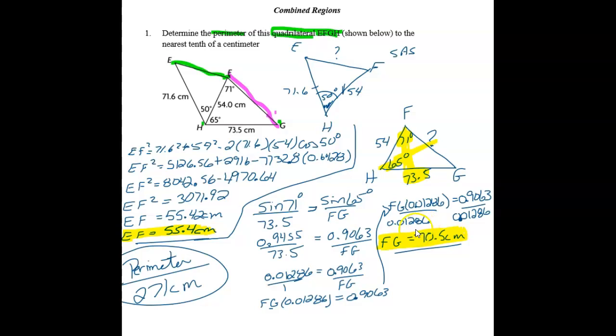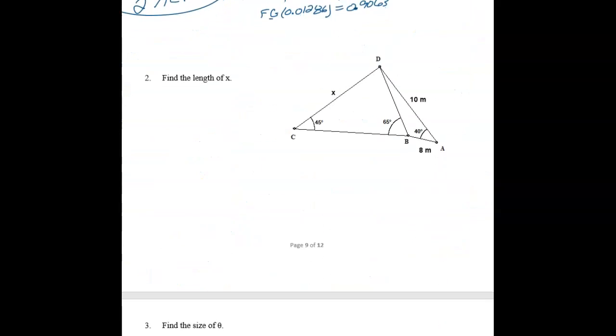So the perimeter is adding up all the sides. So we now have EF and FG. So 55.4 plus 70.5 plus 71.6 plus 73.5, and you should get a perimeter of 271. Moving on now to another question.